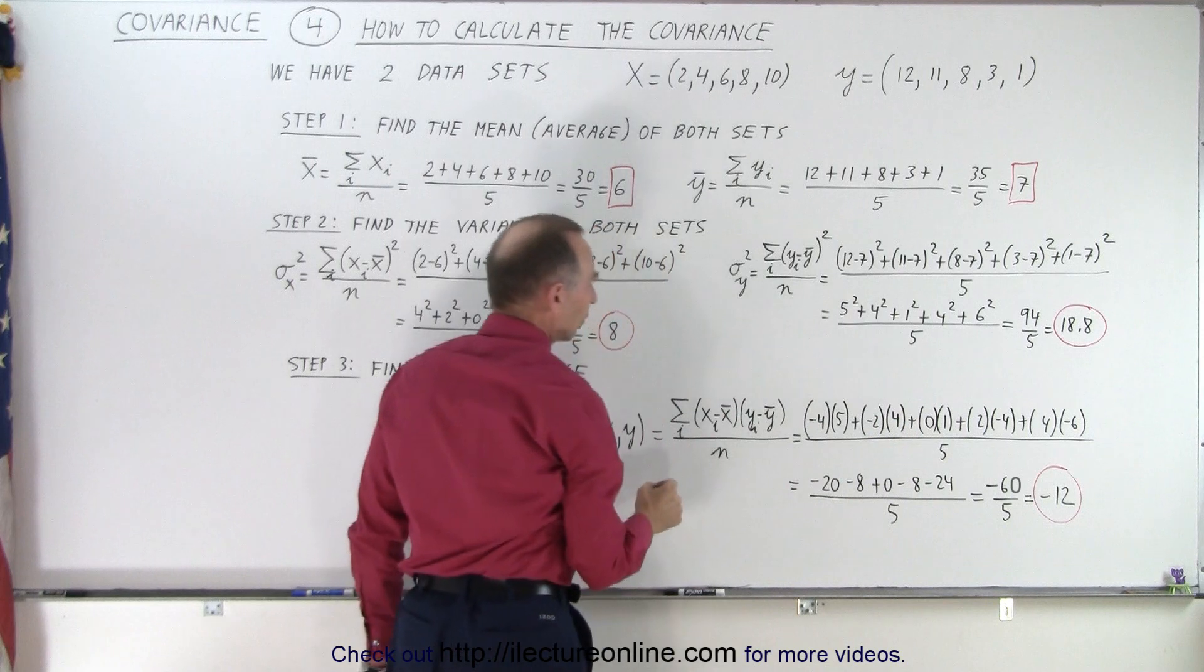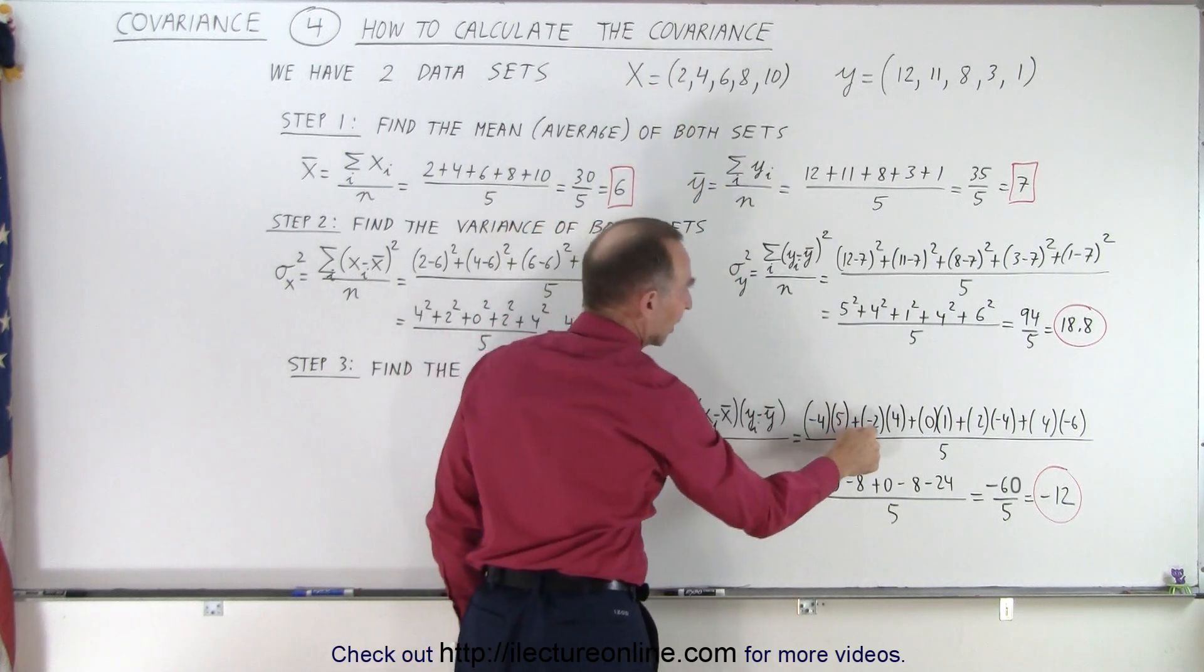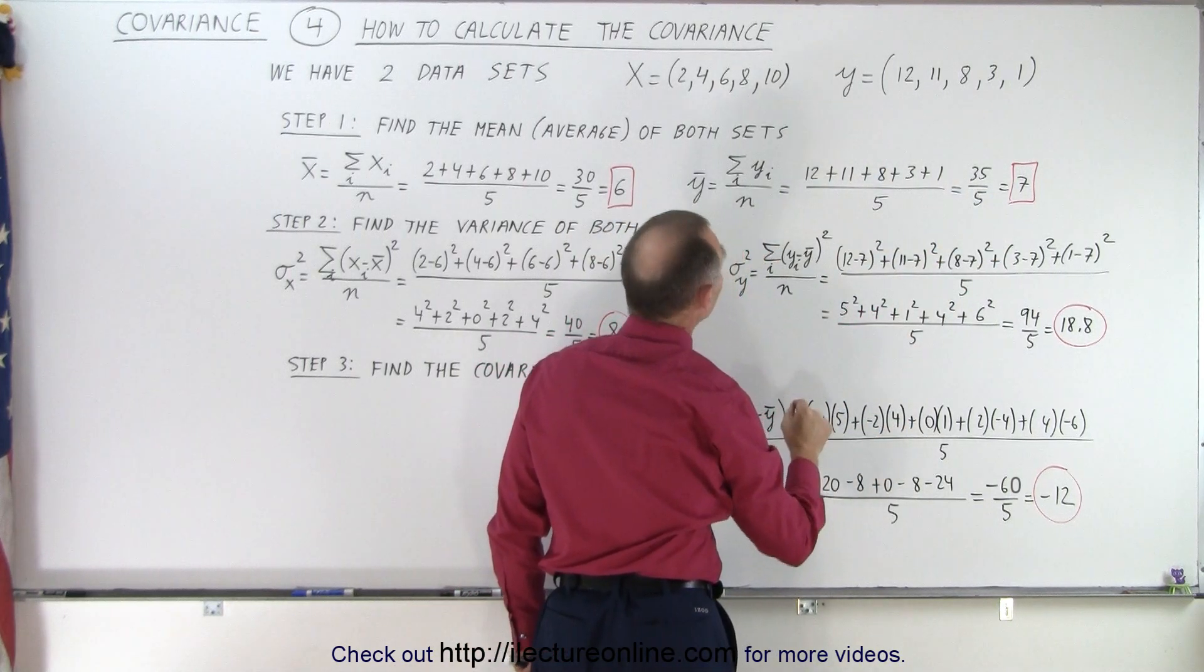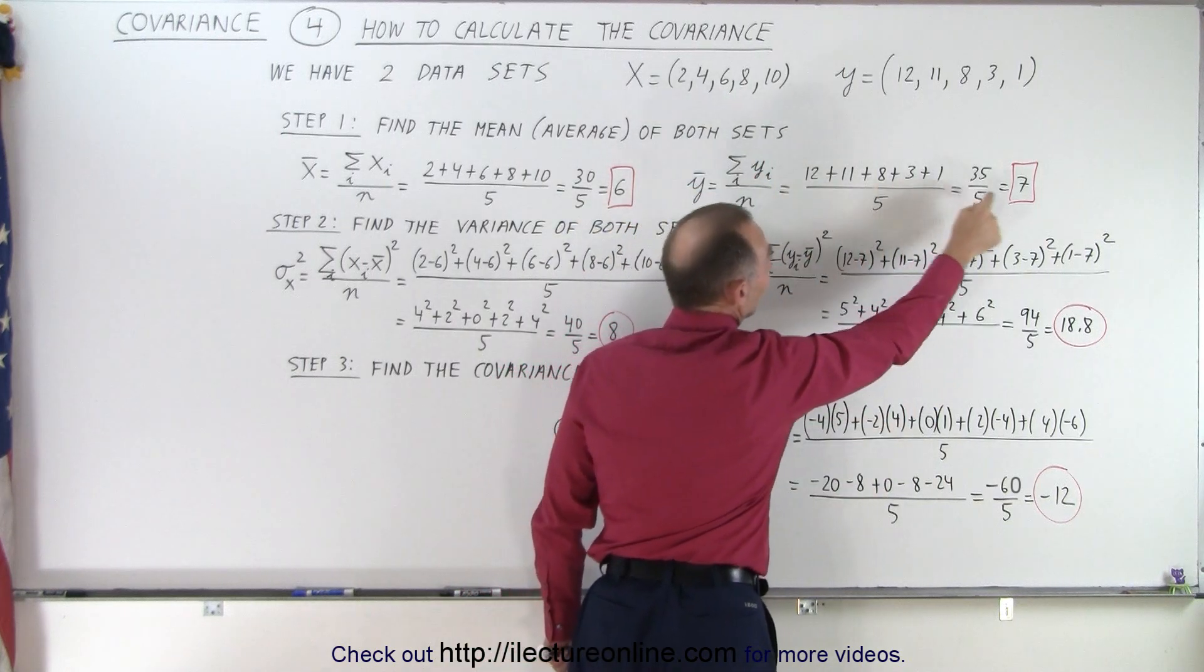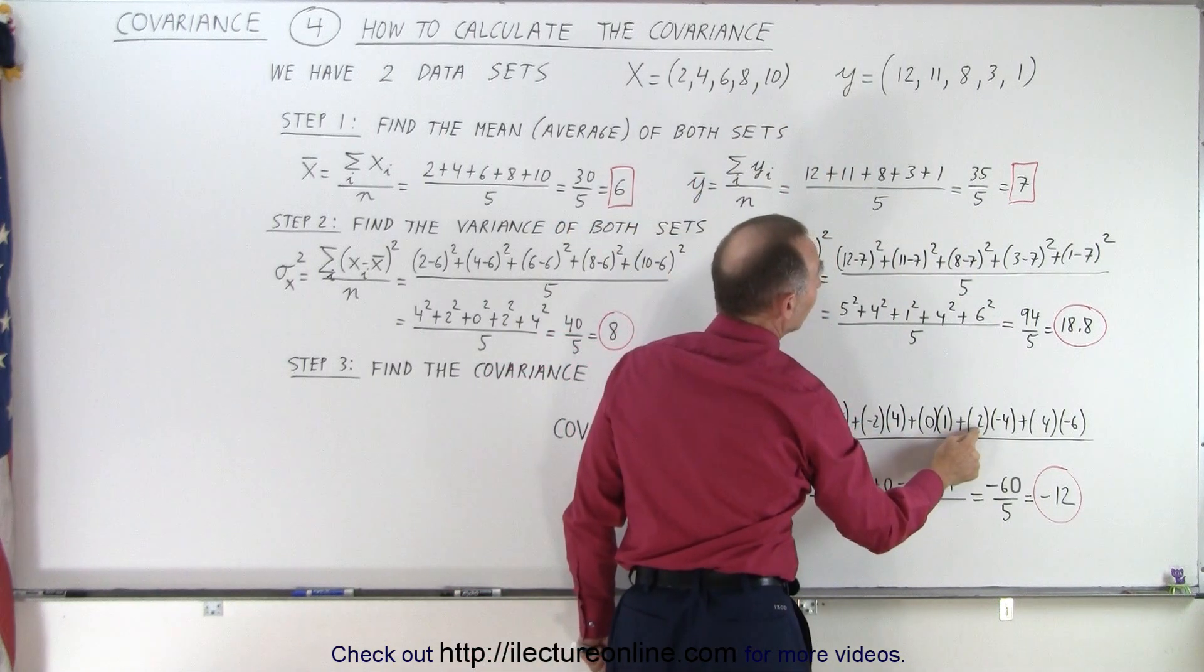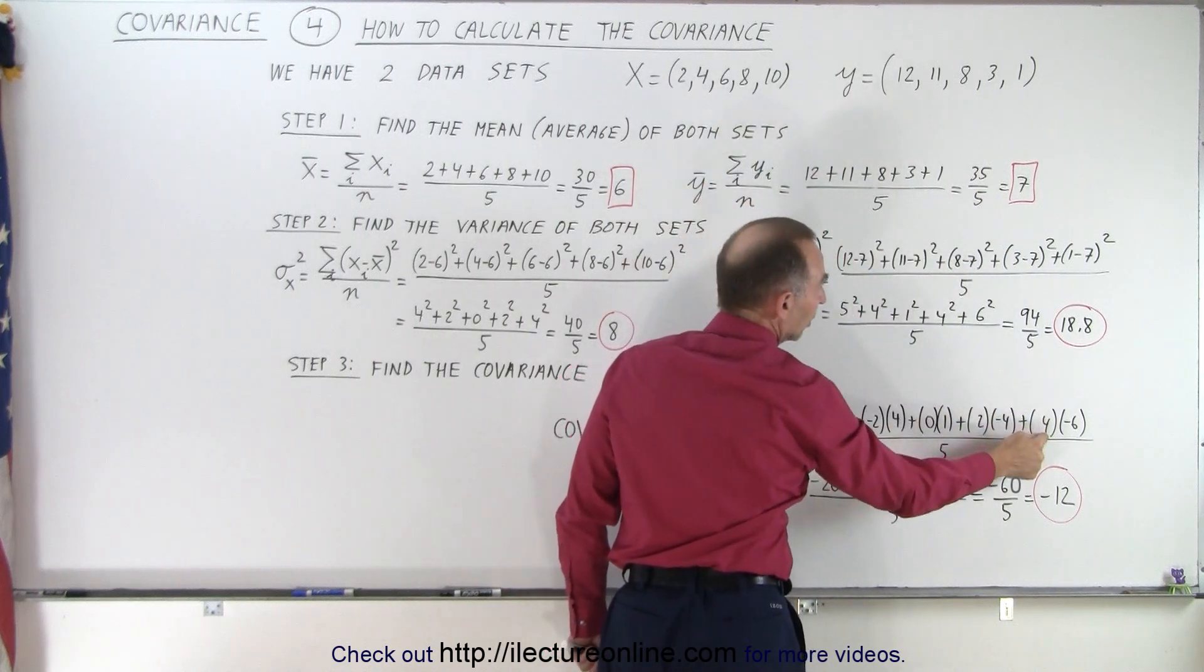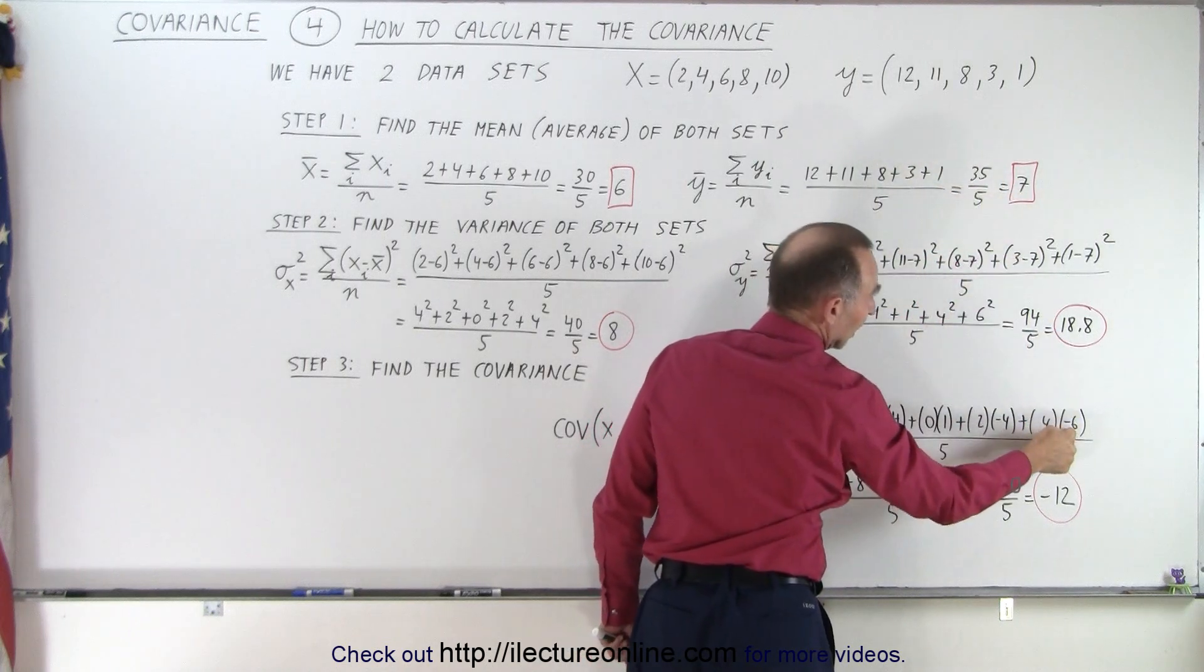For the second product, we take the second number minus six, four minus six gives us negative two. And the second number here minus the average, 11 minus seven, which is four. We multiply them together. Six minus six gives us zero. Eight minus seven gives us one. Eight minus six gives us a positive two. And three minus seven gives us a negative four. Ten minus six gives us four. And one minus seven gives us a negative six.